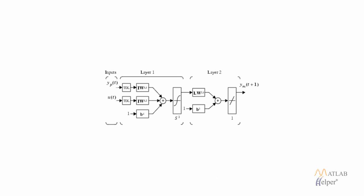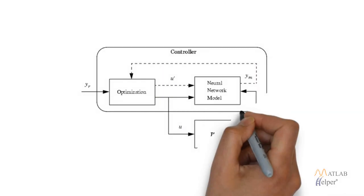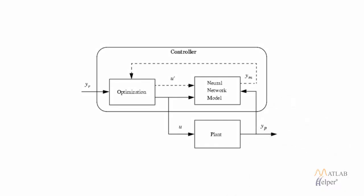As you can see, this is similar to our time series neural network — this is the complete model we will be looking into. In the first step we have created the neural network model of our plant. In the second step, we will use this neural network model to predict the future values, that is YM, to be fed into the optimization block. The optimization block is also fed with YR, which is the reference signal we want from the plant.